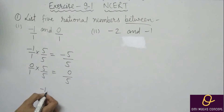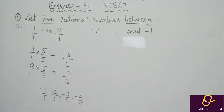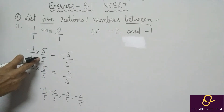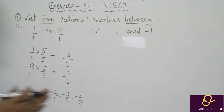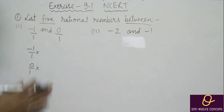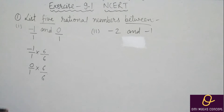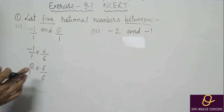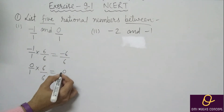Ab aap zero aur minus five ke beech mein agar aap numbers dekhte hain — between bolte hain means beech mein hona chahiye — toh na aap zero loge, na five loge. Toh hamare paas kya aayega? Minus one, minus two, minus three, minus four — kitne number hain? Ek, do, teen, char. Aur chahiye kitne the? Five. Isliye aapko jo same number diya hai, usse multiply nahin karna hai — ek number extra hona chahiye.